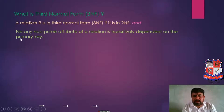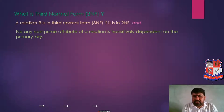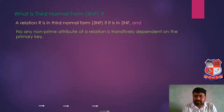दूसरा जो criteria है: no any non-prime attribute of a relation is transitively dependent on the primary key. Relation के जितने भी non-prime attributes है, वो primary key पे transitively depend नहीं होने चाहिए. समझते हैं — पहले तो हम समझते हैं कि non-prime attribute क्या है, prime attribute क्या है, और transitive dependency क्या है.